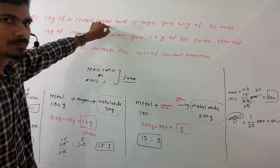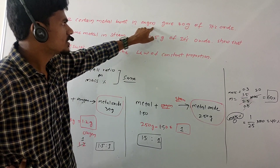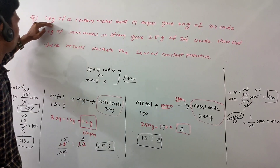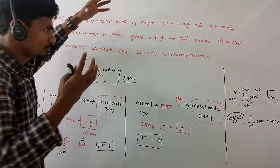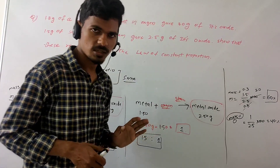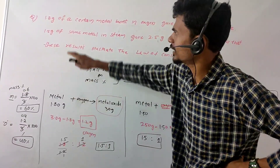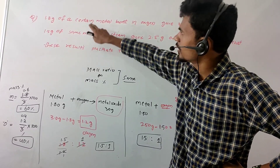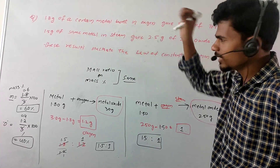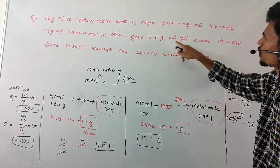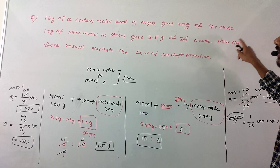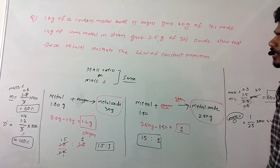In oxygen, 1.8 grams of a metal is burned in oxygen and gives 3.0 grams of its oxide. Next: 1.5 grams of the same metal is burned in steam and gives 2.5 grams of its oxide. We need to show that these results illustrate the law of constant proportion. The law of constant proportion states that in a compound, the elements are always present in the same fixed mass ratio and same mass percentage.